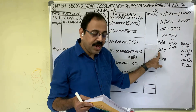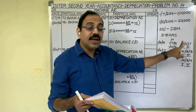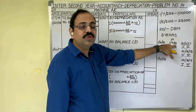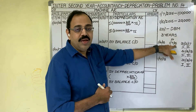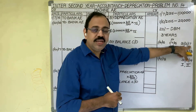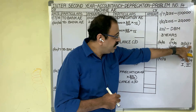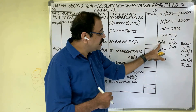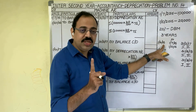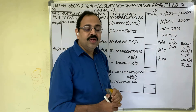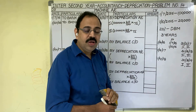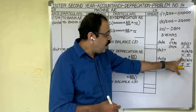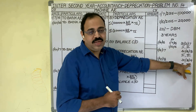Prepare the machine account for three years by closing books on 31st March every year, meaning the firm is following the financial year starting 1st April and ending 31st March. The first asset was purchased on 1st July 2016, so the first year is 2016-17. For three years: second year is 2017-18, third year is 2018-19. So we have to show the asset account up to 31st March 2019.